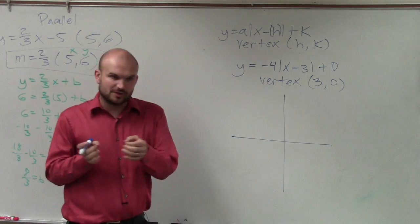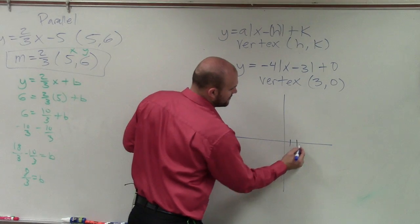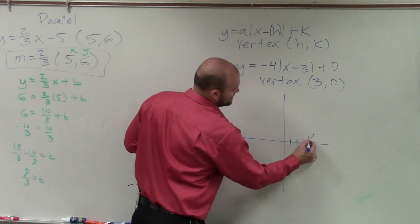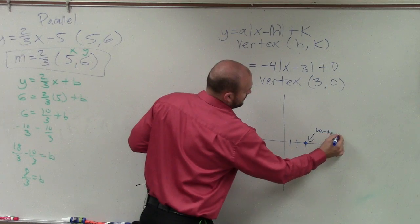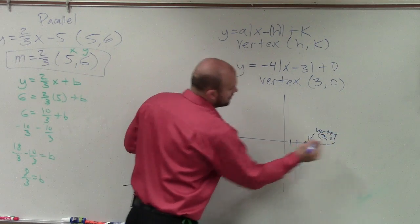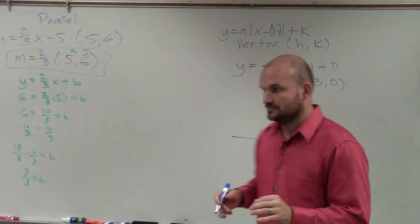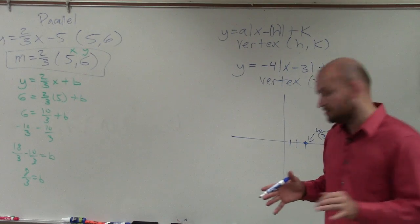Because remember, the standard form is at 0, 0. So now I go over three units, and I make my vertex. Does anybody follow me how I found my vertex? Yes, no, maybe so? All right, good.